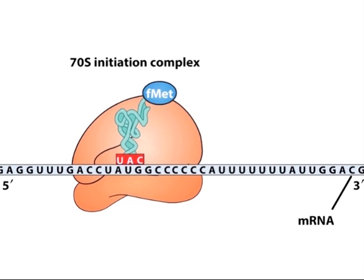The ribosome has three sites for tRNA binding, designated the P (peptidyl), A (aminoacyl), and E (exit) sites. The initiator methionyl tRNA is bound at the P site.